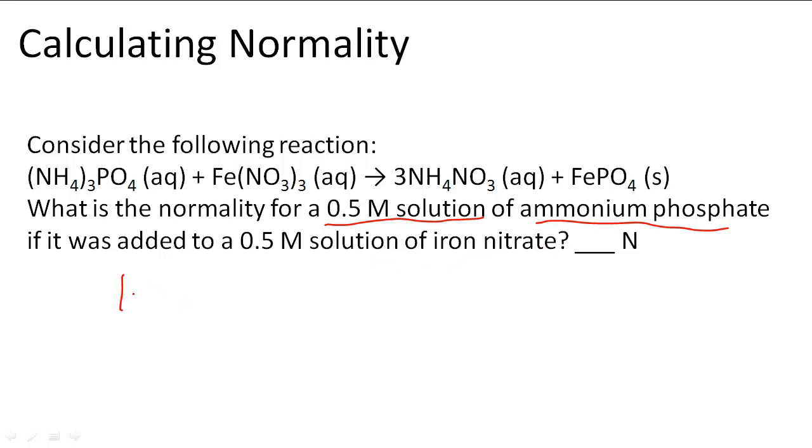So we know that one mole of ammonium phosphate is going to produce one mole of PO4³⁻ ion. What we have to notice is that the moles we have here, the molarity which we have here, is 0.5 molar.